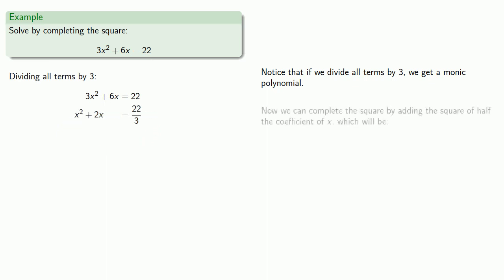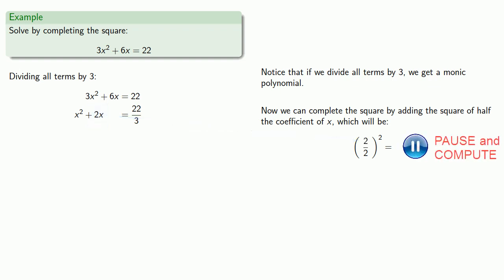And now we can complete the square by adding the square of half the coefficient of x. So our coefficient of x is 2, the square of half will be 1. And so we'll add 1 to both sides.